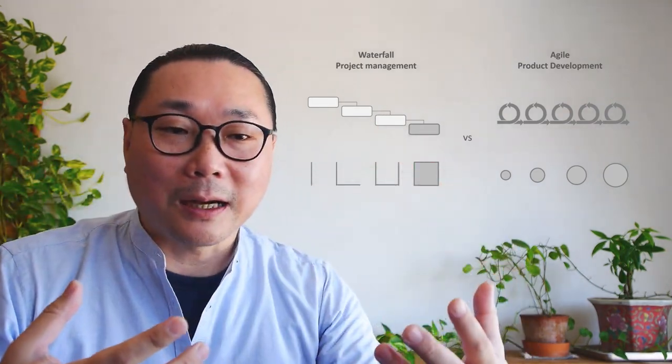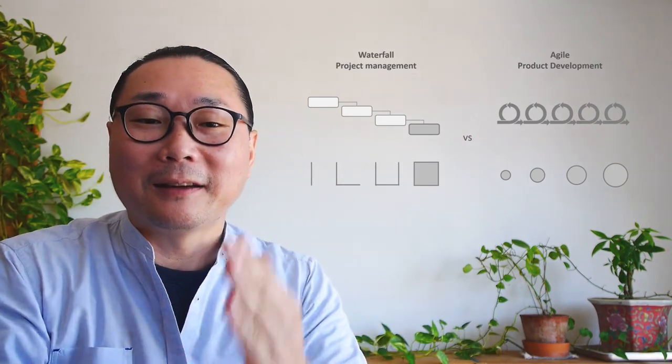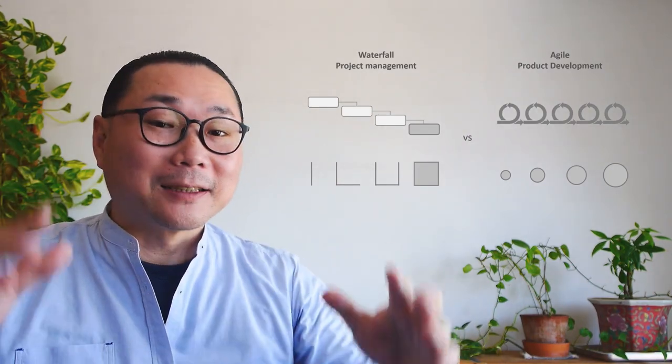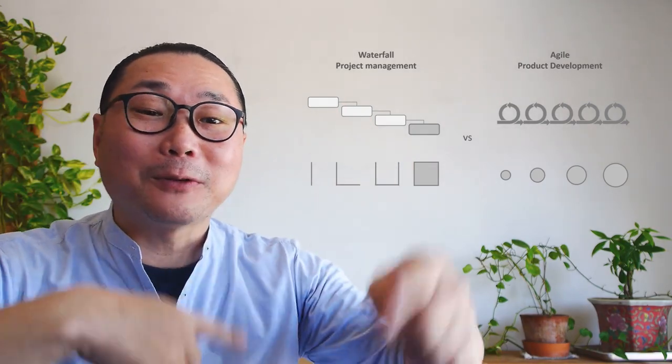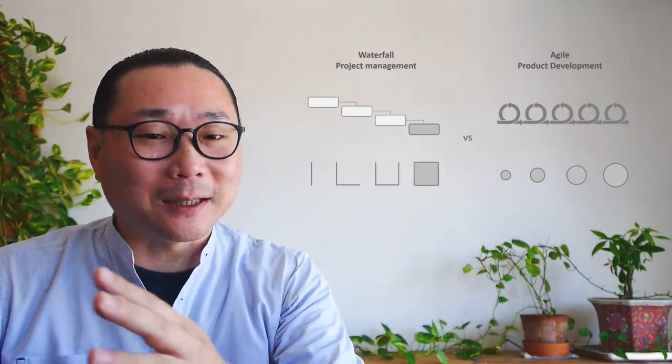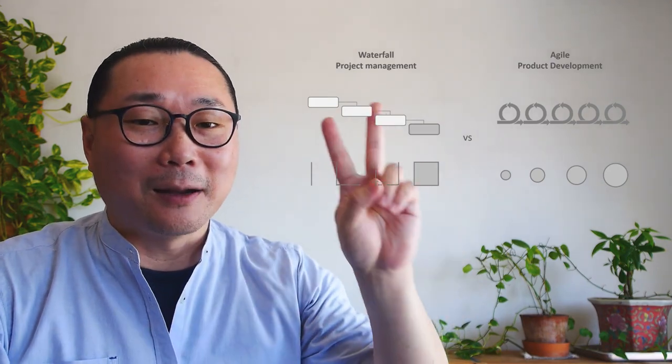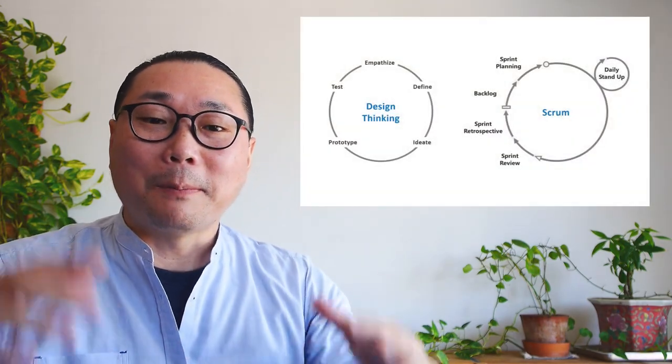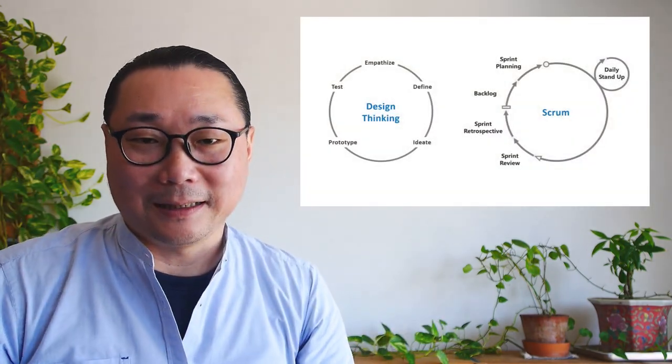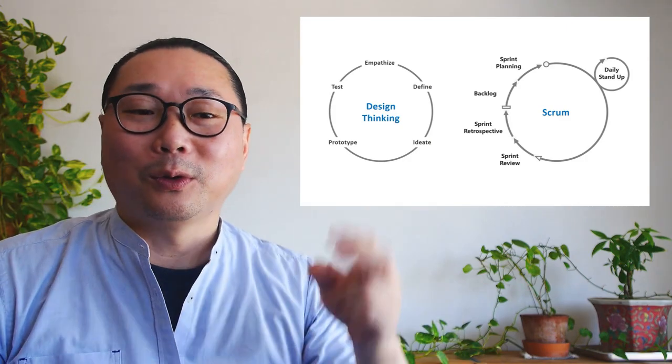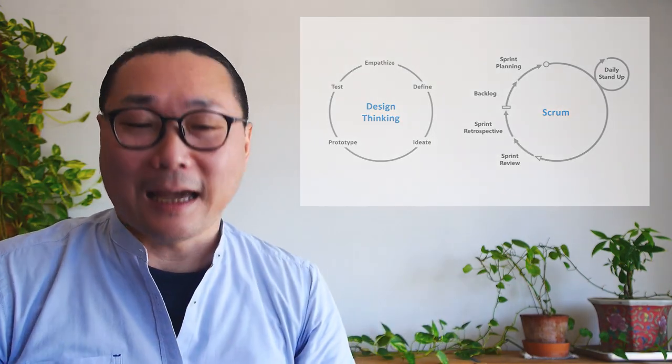Then we learn from those increments, adapt our plan, and iterate until we crack the challenge. So experimentation and iteration, learn and adapt. This is reason number two of why we do Agile. And design thinking and Scrum are both super smart practices that embrace these two reasons of why Agile.